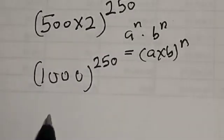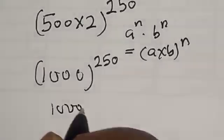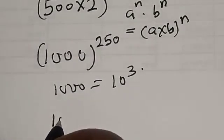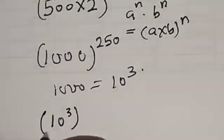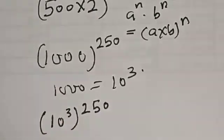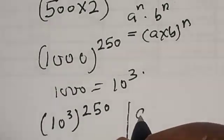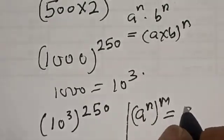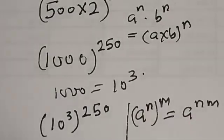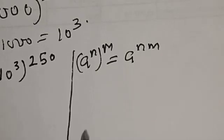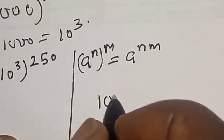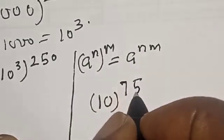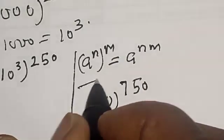But 1000 is 10 raised to power 3. So we have 10 raised to power 3, all raised to power 250. Remember this rule: if you have A raised to power N raised to power M, this is equal to A raised to power N times M. Now we have 10 raised to power 3 times 250, that is 750. 10 raised to power 750 is our final answer.